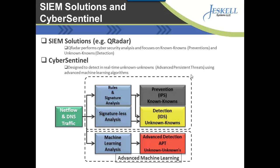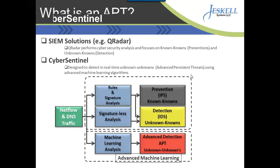CyberSentinel uses a slightly different approach. We use advanced machine learning technologies to detect unknown unknowns. By monitoring your network and watching for anomalies in both a supervised and unsupervised way, we're able to detect attacks before a signature is produced for them. It's a very advanced and effective approach in today's cyberspace, where we see different attacks changing on a daily basis and causing significant financial loss to enterprises.